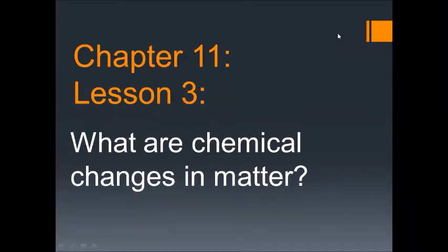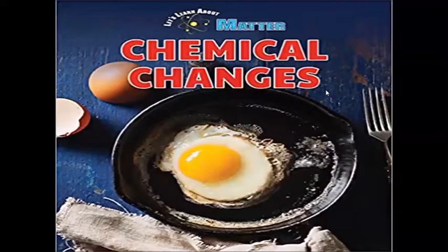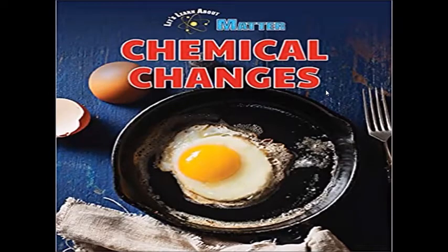Chapter 11, Lesson 3: What are chemical changes in matter? A chemical change happens when one kind of matter changes into a different kind of matter, and the matter will not change back.